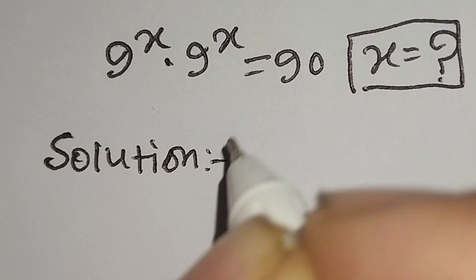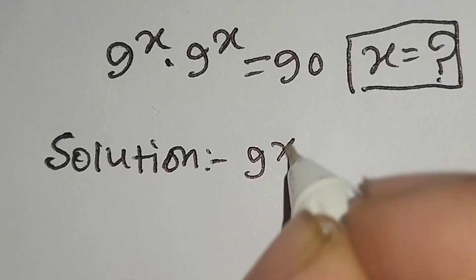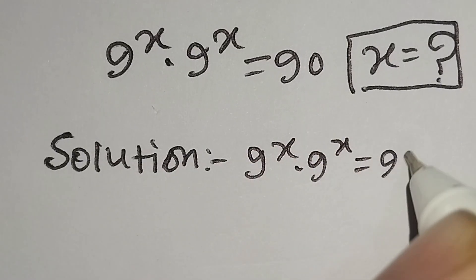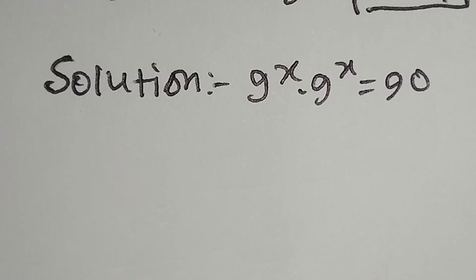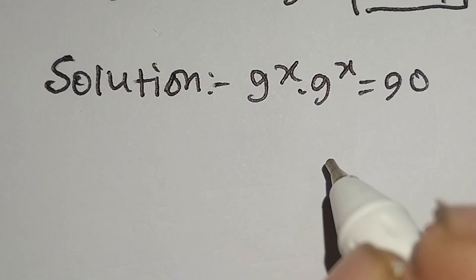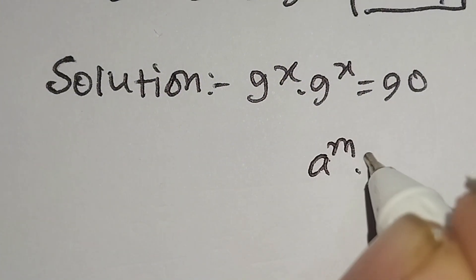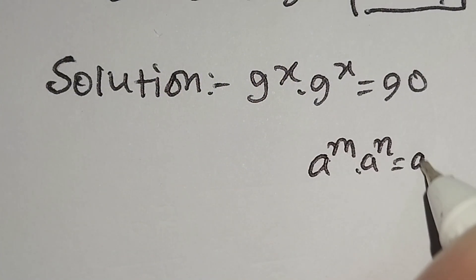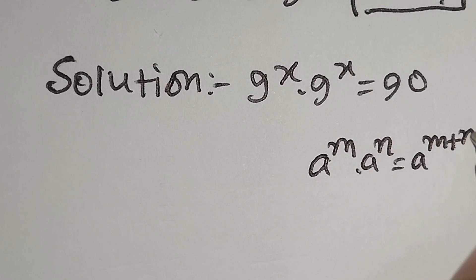The given equation is 9 to the power x times 9 to the power x is equal to 90. We know a to the power m times a to the power n is equal to a to the power m plus n.